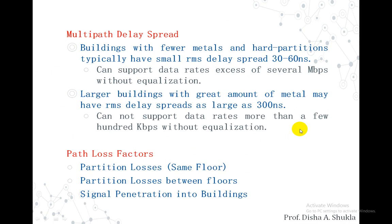Regarding multipath delay spread: buildings with fewer metals and hard partitions typically have small RMS delay spread of 30 to 60 nanoseconds and can support data rates in excess of several Kbps without equalization. Larger buildings with greater amounts of metal may have RMS delay spread as large as 300 ns and cannot support data rates of more than a few hundred Kbps without equalization.